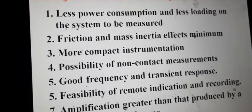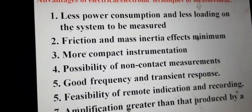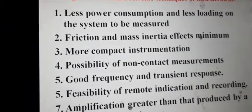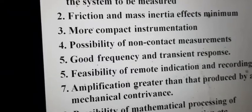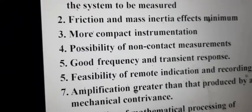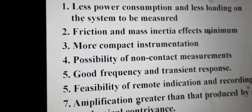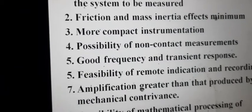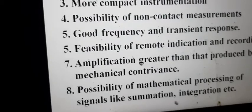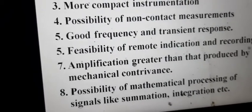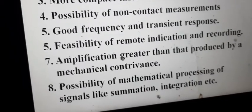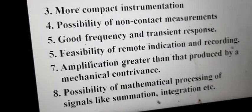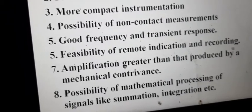Now, why should we prefer electrical or electronic techniques of measurement over mechanical techniques? Electrical measuring instruments are small and compact in size, so they consume less power and have less loading on the system being measured. Because of their smaller size, friction and inertia effects are minimum. We can also perform non-contact types of measurement, meaning we don't need to touch the measurement device to the object being measured. Additionally, they have good frequency and transient response, responding to sudden changes in input conditions, and they have the feasibility of remote indication and recording — we don't have to be physically present where the transducer is measuring.